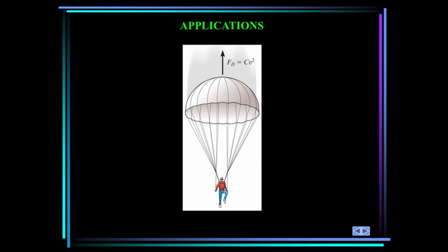So here's the parachutist. The drag force is equal to the drag coefficient C times the square of the velocity. Can you calculate the velocity and acceleration of the parachutist at any point in time? This may be useful for landing purposes.